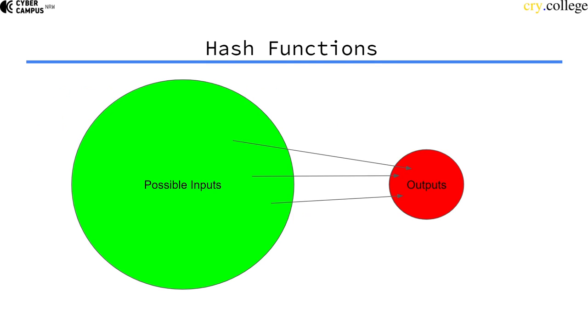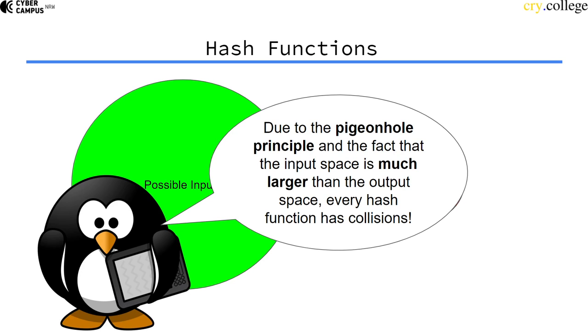In a hash function, the set of possible inputs is much larger than the set of possible outputs, since we allow for arbitrarily long inputs. So by the pigeonhole principle, there must be a collision.